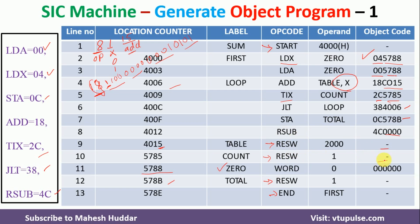For WORD 0, we are creating one integer constant. The size of this integer constant is 3 bytes and its value is 0, so the object code is 000000 — a 3-byte representation of 0. For the remaining RESW directives, we do not have any object code, so those are left blank.